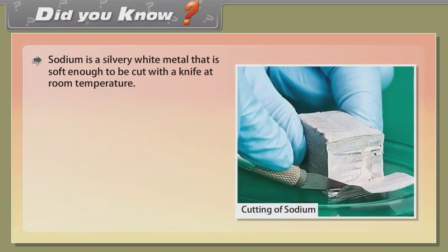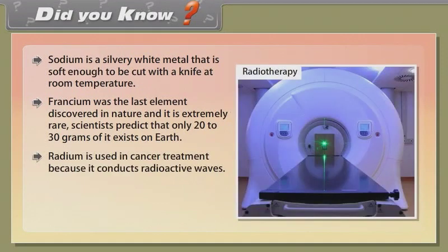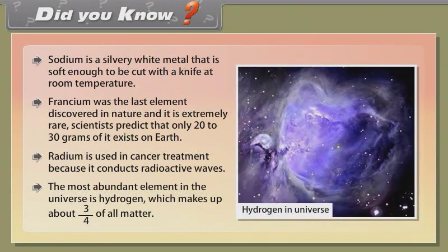Did you know. Sodium is a silvery white metal that is soft enough to be cut with a knife at room temperature. Francium was the last element discovered in nature and it is extremely rare. Scientists predict that only 20 to 30 grams of it exists on earth. Radium is used in cancer treatment because it conducts radioactive waves. The most abundant element in the universe is hydrogen, which makes up about 3 fourths of all matter.